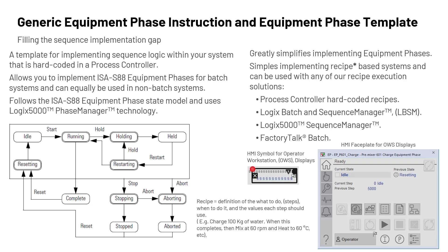It follows the ISA S88 equipment phase state model and uses Logix 5000 phase manager technology. An example of the ISA S88 equipment phase state model can be seen in the diagram on the left. It greatly simplifies implementing equipment phases and also simplifies implementing recipe-based systems that can be used with any of our recipe execution solutions — for example, process controller hard-coded recipes, Logix Batch, Sequence Manager, and our FactoryTalk Batch comprehensive batch management solution.